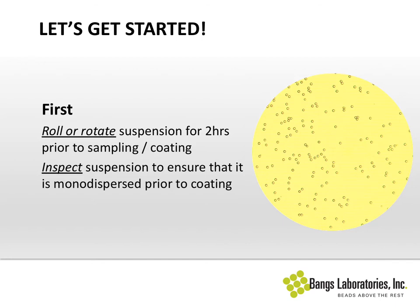Now that we've lectured you on proper care of your reagents, before we get started with the coating procedure, it's very important that you know you have a good quality suspension going into the coating. Because if you have an aggregated suspension, things certainly aren't going to improve once you begin the coating process. As a matter of course, we roll or rotate our suspensions for a couple of hours prior to sampling from a bulk container and certainly prior to coating, then inspect the suspension to ensure that it's monodispersed.